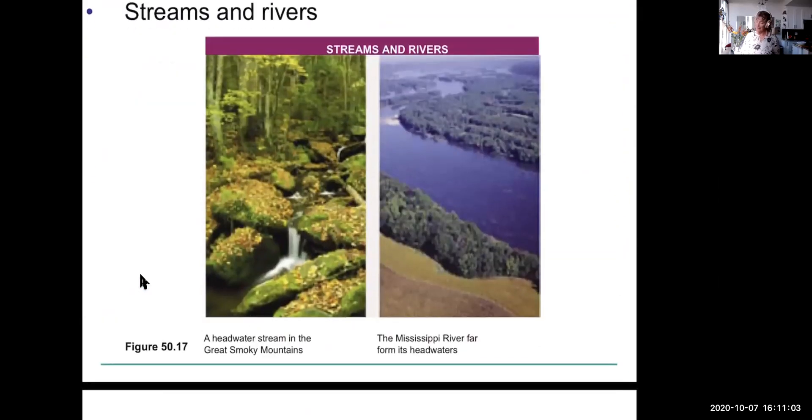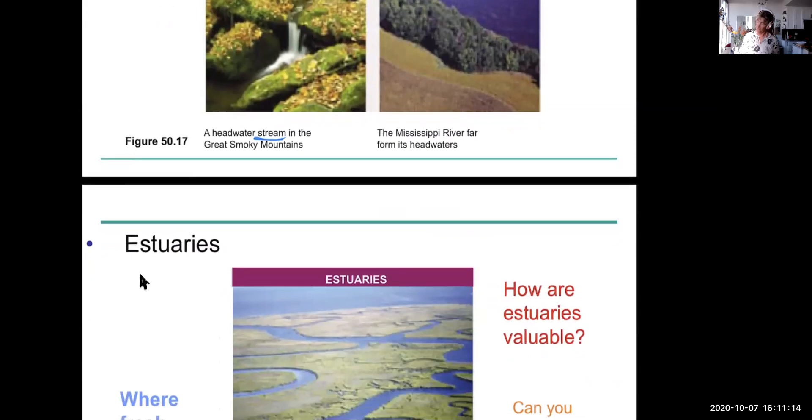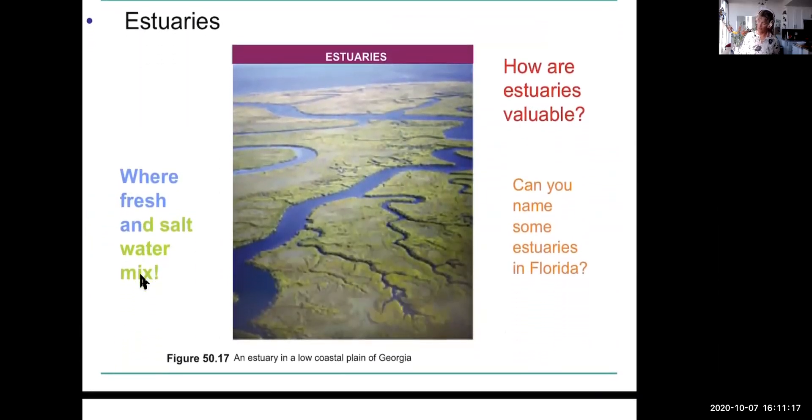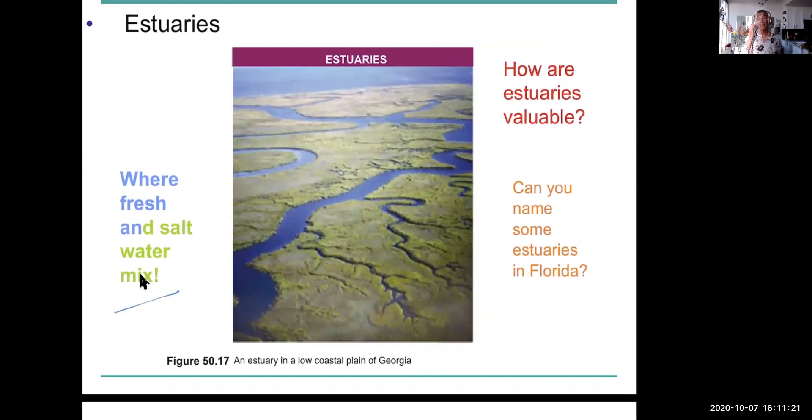And streams and rivers we've looked at. Usually a stream is in the headwaters, the higher elevation parts. And the rivers are the lower, slower moving water. And estuaries are where freshwater and saltwater mix. How are they valuable? I'm going to cross this out. I'm going to say, can you name some estuaries in BC where freshwater and saltwater mix? So this is a river flowing toward the ocean. But the ocean's tides are basically pushing up river. So what are some main rivers in BC? Do you know the names of any?